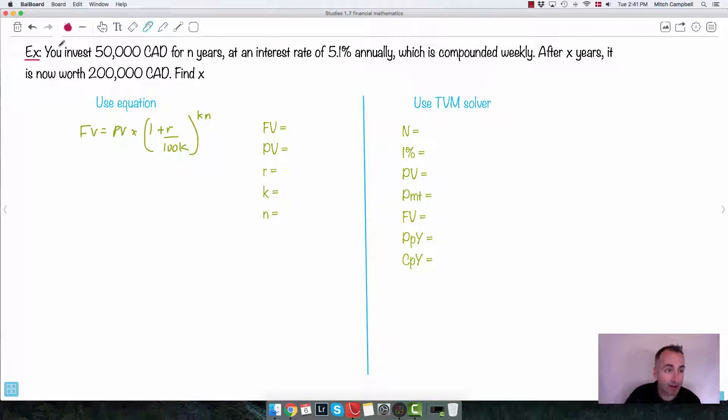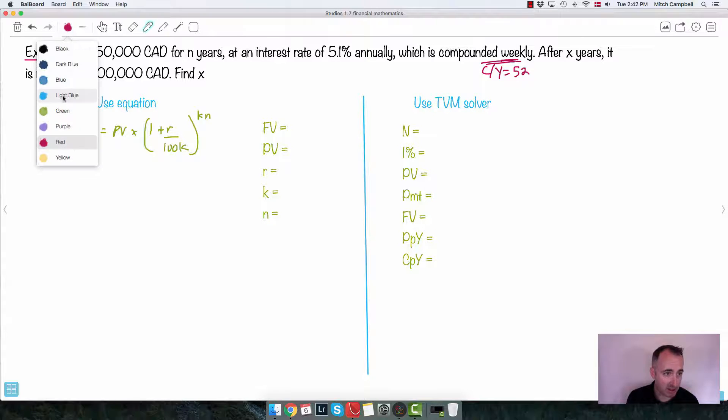Let's do another example here. You invest 500,000 Canadian for N years. You do it at an annual interest rate of 5.1, compounded weekly. Remember, if it's weekly, your compounding periods per year is going to be 52, 52 weeks in a year. After X years, it's now worth 200,000. So let's use the equation and the TVM solver, or the finance solver, to do it. If we use the equation, we just have to put in the numbers here.